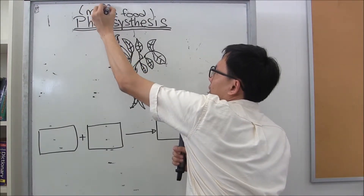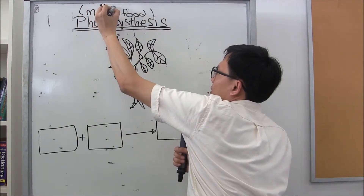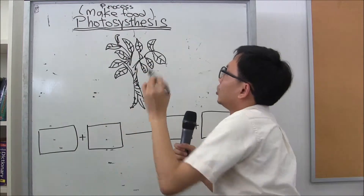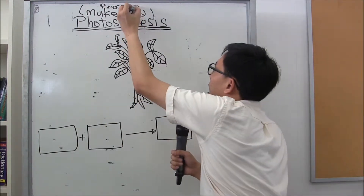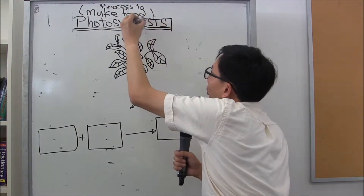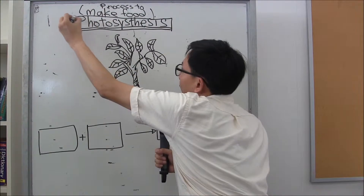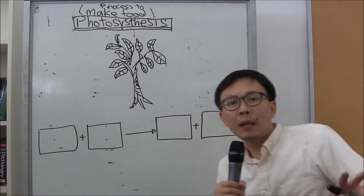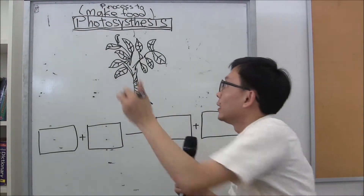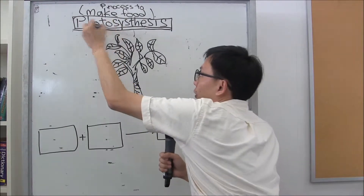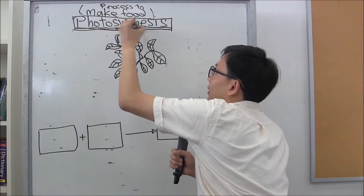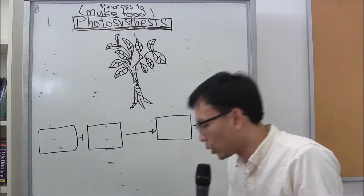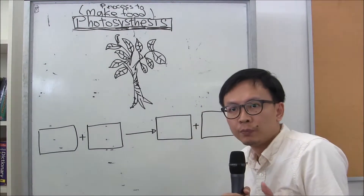The process is for leaves to make food, and it's called photosynthesis. Please remember how to spell photosynthesis — it's not too difficult. Photosynthesis. So photosynthesis is a process for leaves to make food.